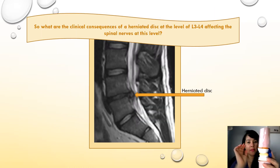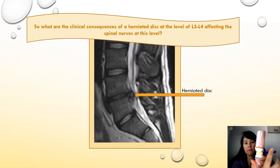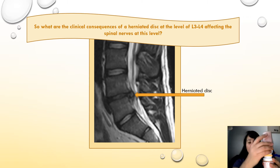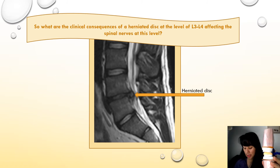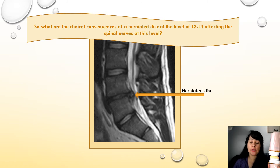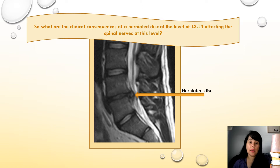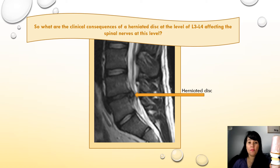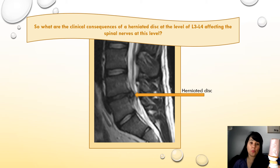Let's imagine for a minute that these are my vertebrae, these are my spinal roots and nerves, and this is my intervertebral disc. An injury on the intervertebral disc may be caused by a certain physical trauma to the spine. At level L3, it may result in thigh and knee pain and weakness, and at level L4, it may cause pain from the lower back to the foot and foot weakness.